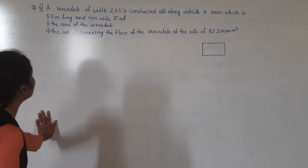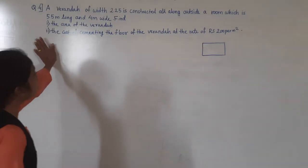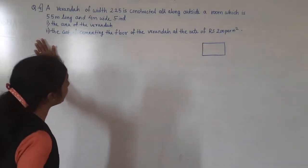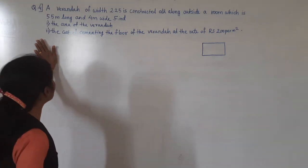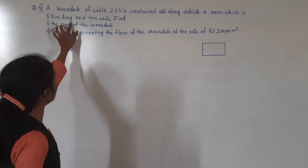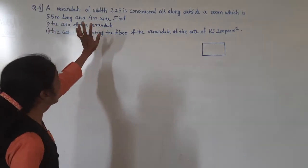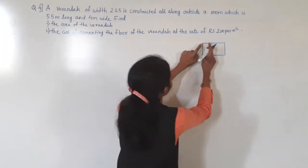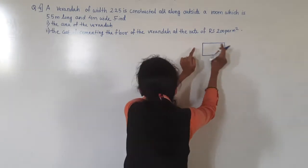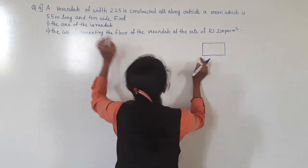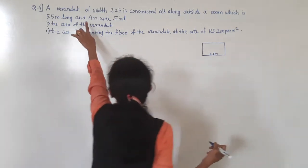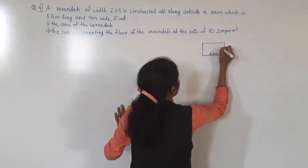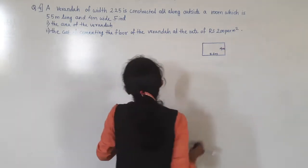Question number 4: a veranda of width 2.25 meters is constructed all along outside a room which is 5.5 meters long and 4 meters wide. Suppose this is the room — its length is given as 5.5 meters long and 4 meters wide.